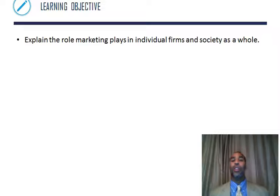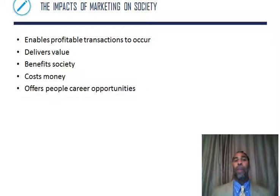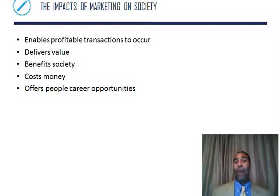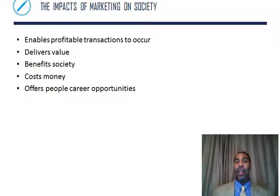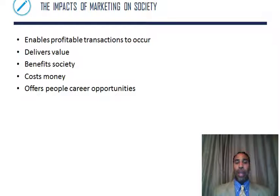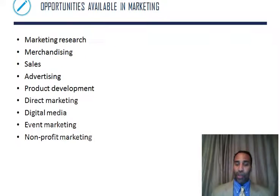Learning objective: explain the role that marketing plays in individuals, firms, and society as a whole. The impact of marketing on society: it enables profitable transactions to occur — profitable for the individual receiving the good or service because they need it, and profitable for the company because they're making profits as intended. It delivers value, benefits society, costs money, and offers people career opportunities. A lot of people want a job in marketing because it is a very, very good profession, and many people covet those positions.